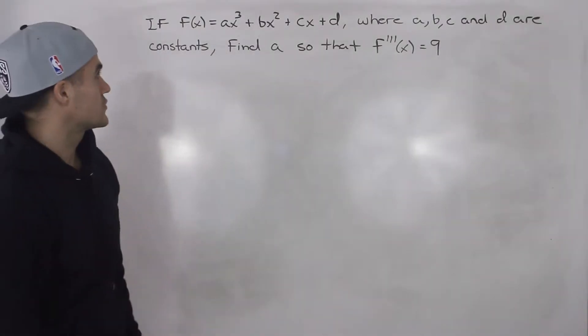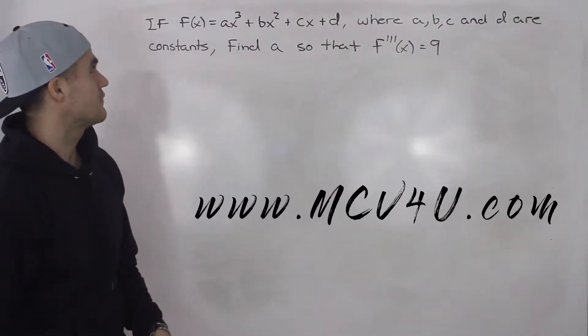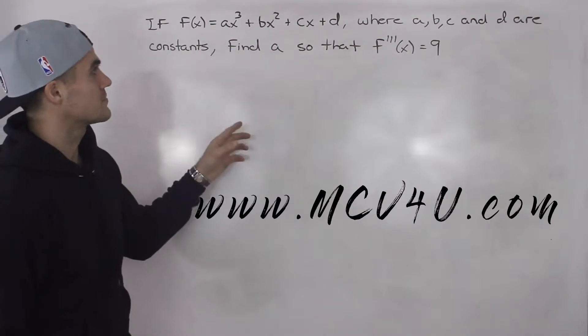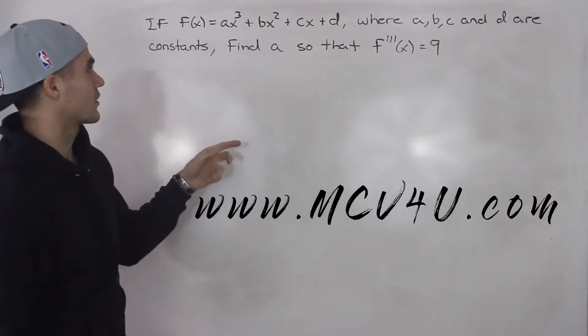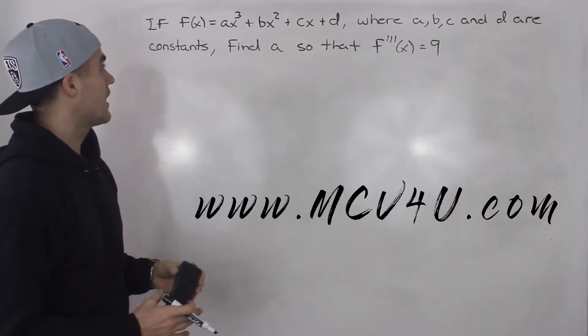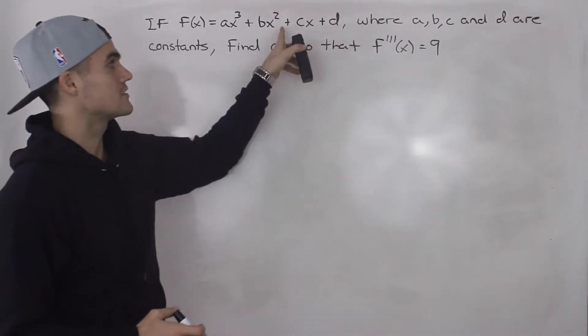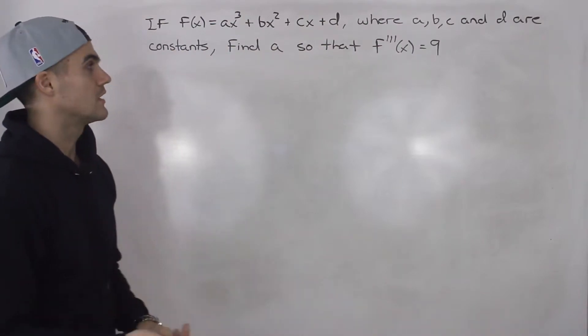What's up everybody, welcome back. Moving on to another question. If f of x equals ax cubed plus bx squared plus cx plus d, where a, b, c, and d are constants, find a so that the third derivative of this function is equal to 9.